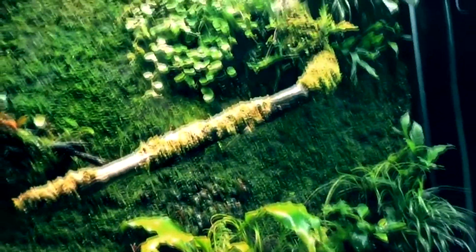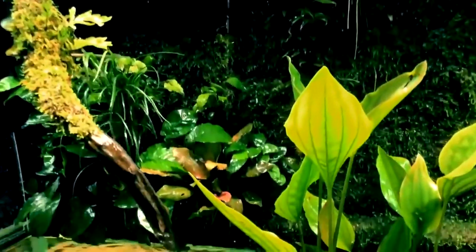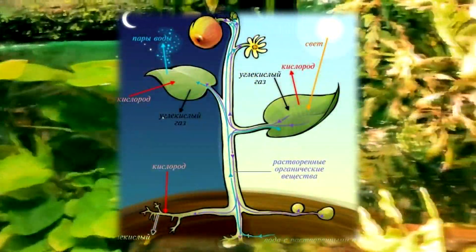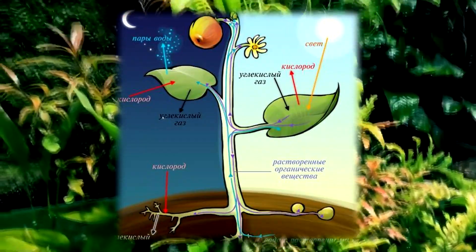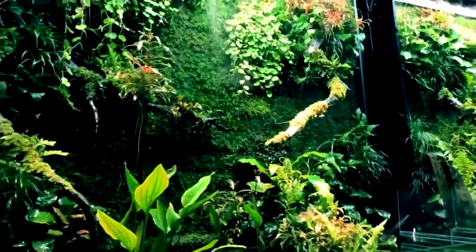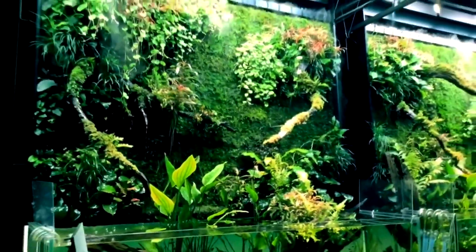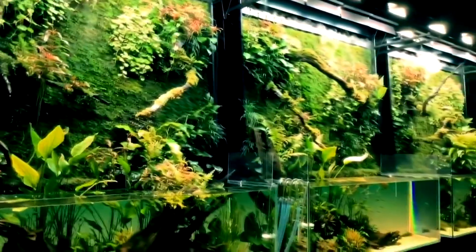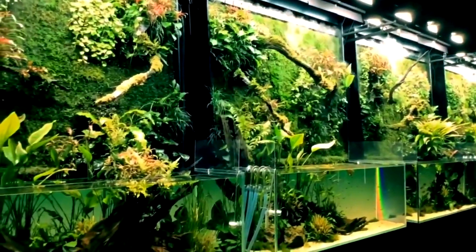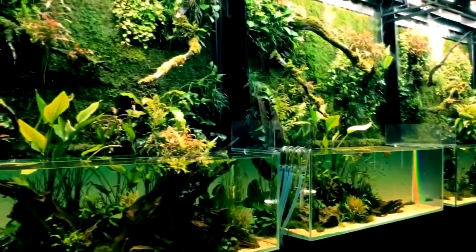Сам механизм потребления СО2 растениями заключается в процессе фотосинтеза. О фотосинтезе было сказано в предыдущих видеороликах, однако давайте повторим. Фотосинтез – это процесс преобразования энергии света в энергию химических связей органических веществ на свету – фотоавтотрофами, при участии фотосинтетических пигментов – хлорофилл у растений, бактериохлорофилл и бактериородопсин у бактерий. В растениях происходит процесс преобразования воды H2O и углекислого газа СО2 под действием солнечного света в богатое энергией органическое соединение – глюкозу С6H12O6.